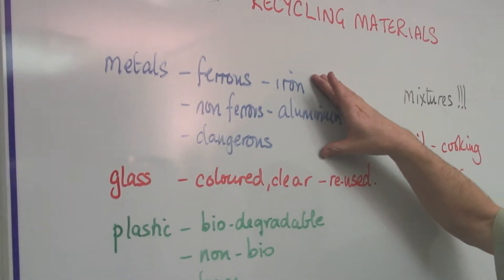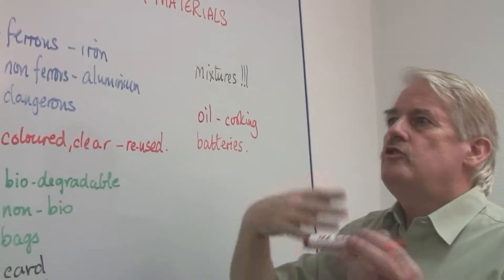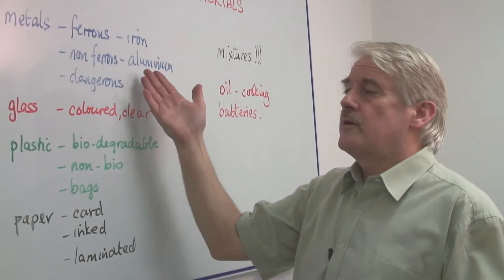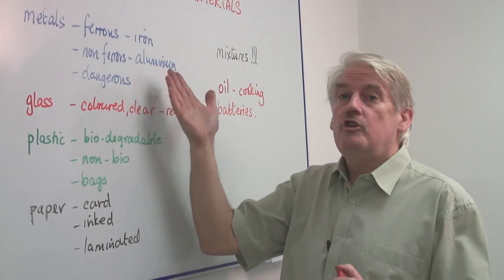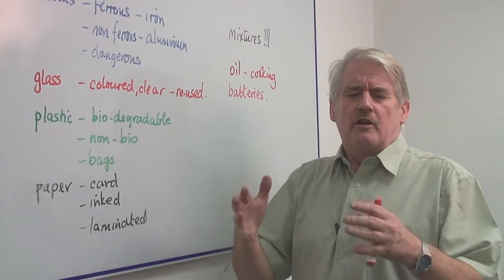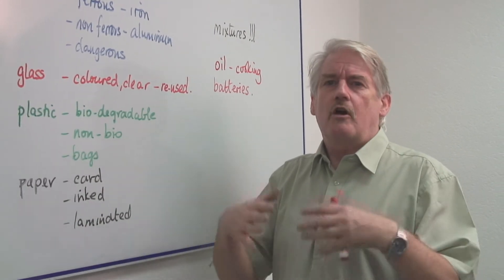Once you remove the iron, you melt it down and you can cast it into new things. Again, the quality of the metal is not as good as the new metal. But it can be used for a lower grade of work, things that don't have to be so strong.